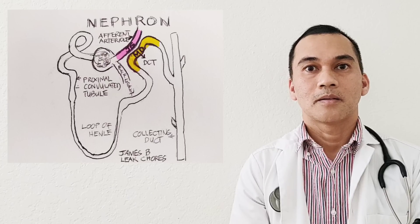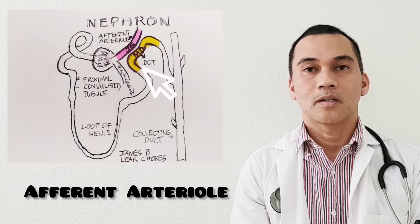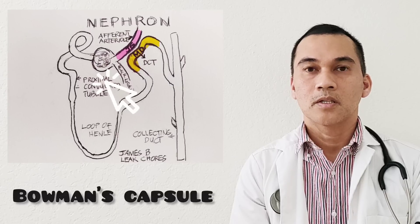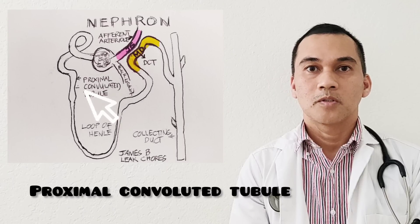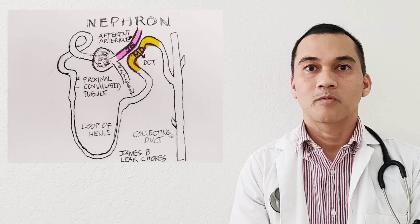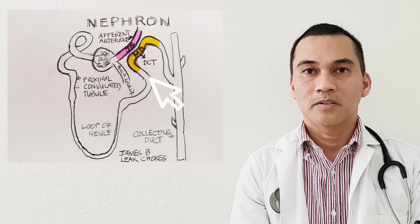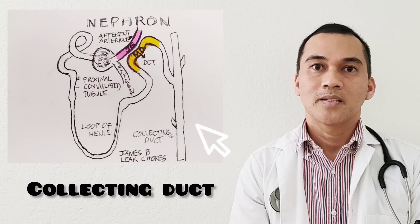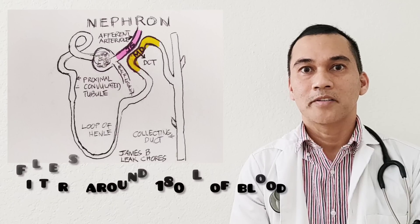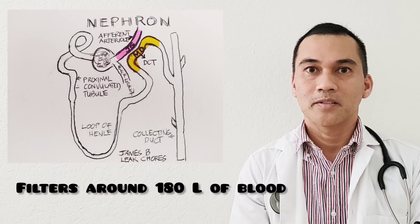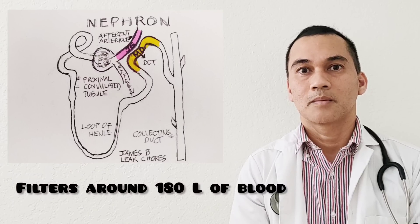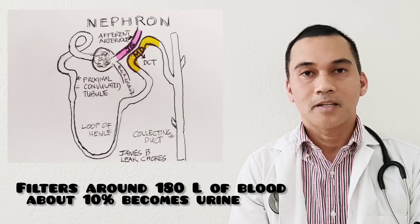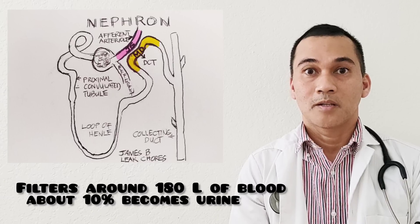So you go from the afferent arteriole into filtration, to the proximal convoluted tubule, to the descending loop of Henle, into the distal convoluted tubule, and to the collecting duct. In a day, the kidney filters around 180 to 200 liters of blood, and about 10%, or 1.8 liters, becomes urine.